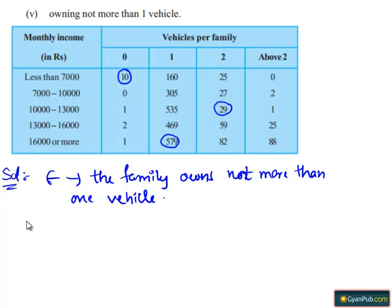Then P of E equals to number of families owning not more than one vehicle which is 2062 whole divided by total number of families which is 2400. Here,